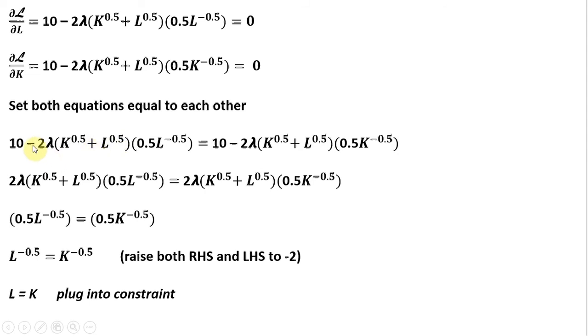And now just simplifying. We've got a 10 and a 10, so they're going to cancel in our next step. Plus we've got a minus and a minus, so that cancels. So now we're down to this step. And I have a 2 lambda multiplied by K to the 0.5 plus L to the 0.5 on both sides. So we can cancel that term, leaving us with this step. The 0.5's now will cancel, leaving us with this step. And then finally raising both the right-hand side and left-hand side to minus 2. We just get L equals K. And we're going to go plug that into the constraint.